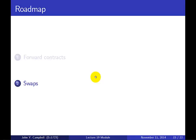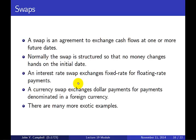Now we move to the second major topic: swaps. What is a swap? It's an agreement to exchange cash flows at one or more future dates. Normally a swap is structured so that no money changes hands on the initial date, just as in a forward contract. We're going to focus on interest rate swaps, which exchange fixed rate for floating rate payments. There are also currency swaps, which exchange dollar payments for payments denominated in a foreign currency, and many more exotic examples.